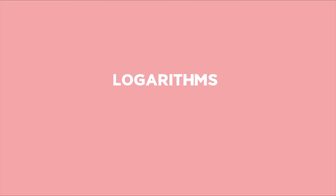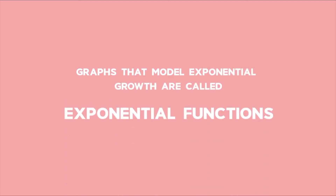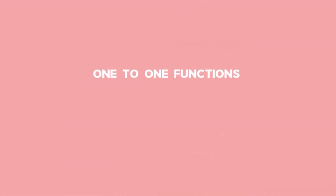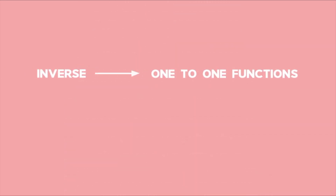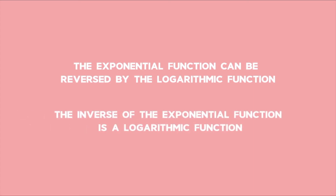You need to understand logarithms before you complete this lesson. Recall, graphs that model exponential growth are called exponential functions. Exponential graphs are one-to-one functions, and hence their inverse will also be a one-to-one function. The exponential function can be reversed by the logarithmic function — therefore, the inverse of an exponential function is a logarithmic function.